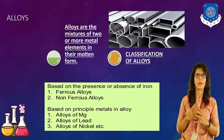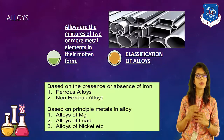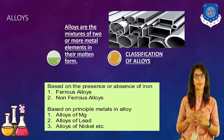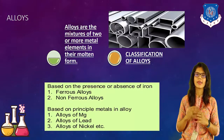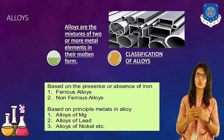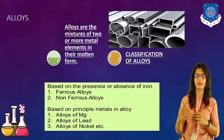The highest percentage of metal present in the alloy determines its classification. Based upon the presence or absence of iron, we can divide alloys into two types: number one, ferrous alloys, and number two, non-ferrous alloys. The second criterion is based on principal metals in the alloy, where we can divide it into three main types: number one, alloys of magnesium; number two, alloys of lead; and number three, alloys of nickel.